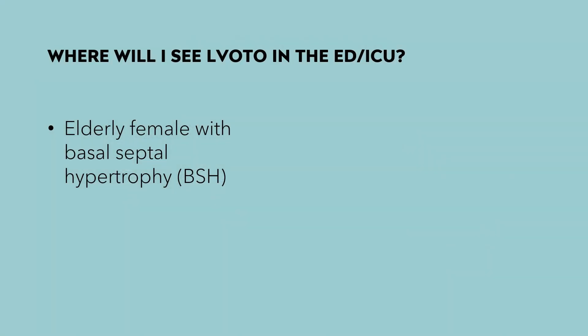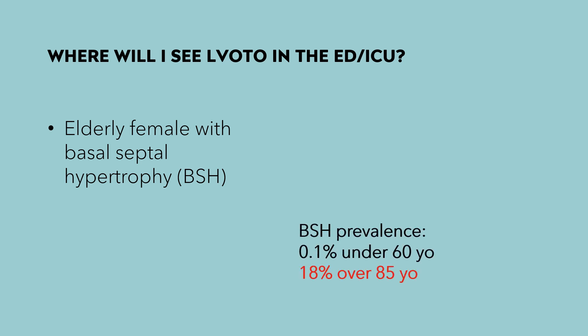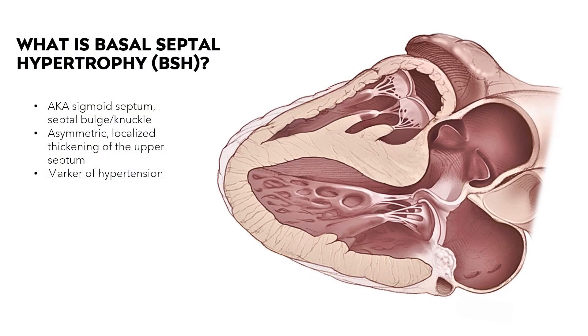To develop a left ventricular outflow tract obstruction, you must have both a predisposing anatomical factor and a condition that induces the LVOTO. In the ED and ICU, a common predisposing anatomical factor is basal septal hypertrophy. Rates dramatically increase over the age of 60 — there is only a 0.1% prevalence under the age of 60 and 18% prevalence over the age of 85. It's also called sigmoid septum, septal bulge, or septal knuckle — an asymmetric, localized thickening of the basal interventricular septum and a marker of remodeling in patients with hypertension.